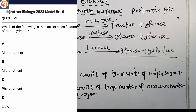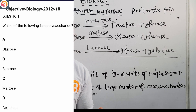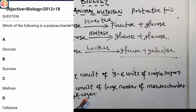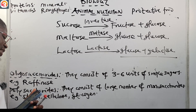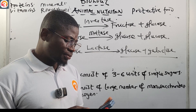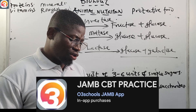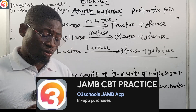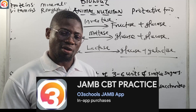Now question 2012 number 18: which of the following is a polysaccharide? Options are A) glucose, B) sucrose, C) maltose, D) cellulose. The correct answer is option D — cellulose. Cellulose is an example of a polysaccharide, as we discussed. There are many other questions on this application, so please download the O3 School JAMB app, activate it, and start practicing your way to success.